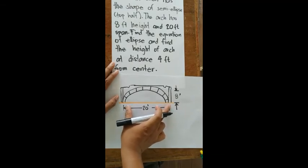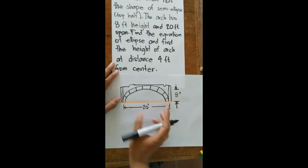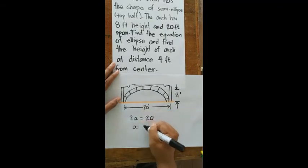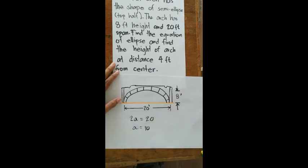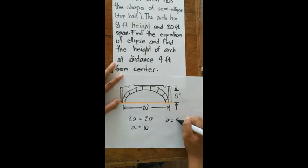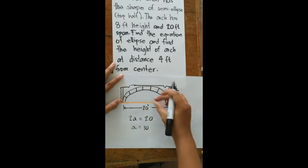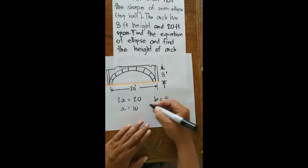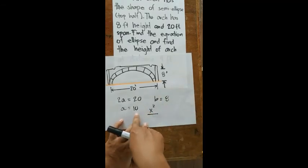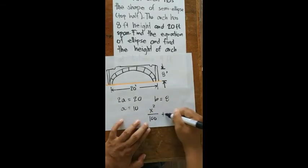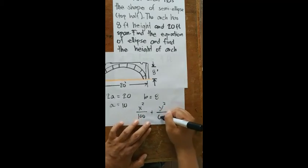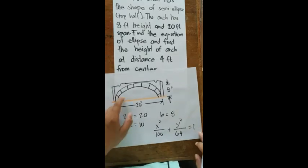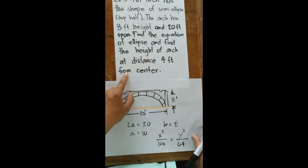The span of 20 feet is the major axis, so 2a = 20, giving a = 10. The height of 8 feet is the semi-minor axis, so b = 8. Our equation is therefore x²/100 + y²/64 = 1.